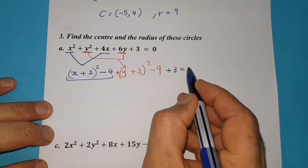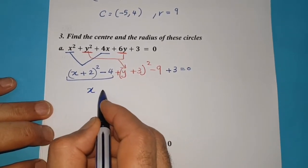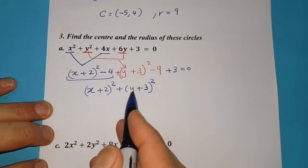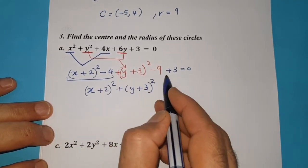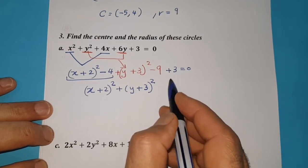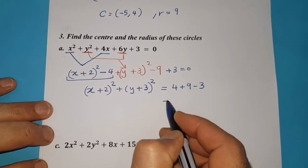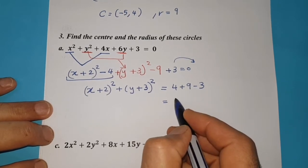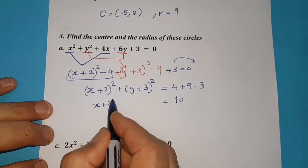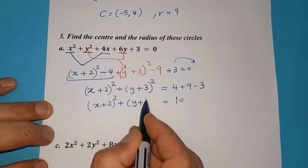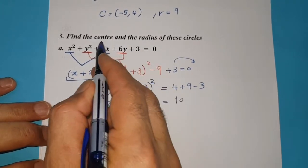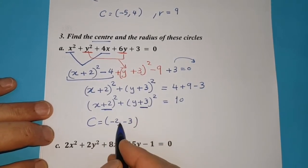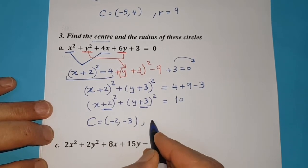Continue the equation: plus 3 equals 0. Now write the equation in center-radius form: (x plus 2) squared plus (y plus 3) squared, and solve the constants: negative 4 minus 9 plus 3, or on the other side, 4 plus 9 minus 3. Moving terms to the right-hand side changes the sign, so 4 plus 9 equals 13, minus 3 equals 10. So (x plus 2) squared plus (y plus 3) squared equals 10. The center is (negative 2, negative 3) — always write the center with the inverse sign — and the radius equals √10.